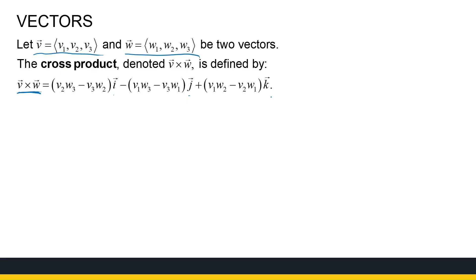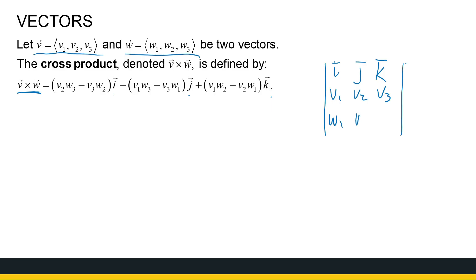If you are familiar with matrices and determinants, the cross product of V and W is the determinant of the matrix with first row i, j, k, second row V1, V2, V3, and third row W1, W2, W3. If you haven't done linear algebra or worked with matrices, we're just going to work through the formula a little bit.